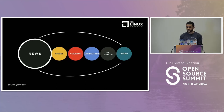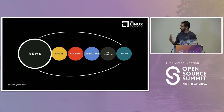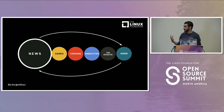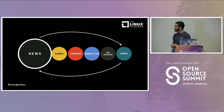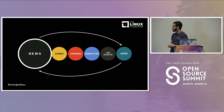News and journalism is the main and most recognized product that we produce, but we also have different products: games — if you're familiar with crosswords, spelling bee, and other things — cooking with our amazing recipes, and The Athletic and audio as well.